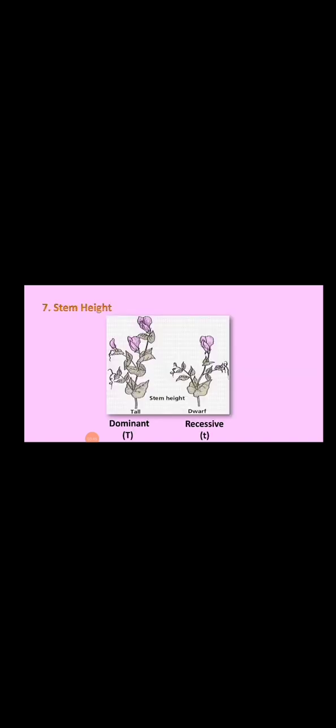Then stem height — tall is dominant over the dwarf plant. On the left side all the dominant characters are present, and on the right side all the recessive characters are present. Now we will see the reasons for Mendel's success — the first one is that the experiment had a large sampling size.